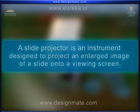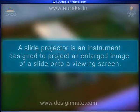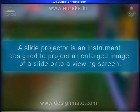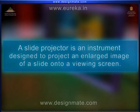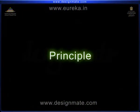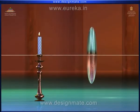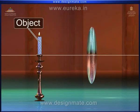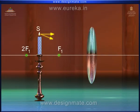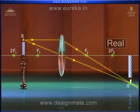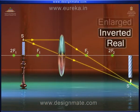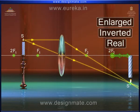A slide projector is an instrument designed to project an enlarged image of a slide onto a viewing screen. The principle behind the working of a slide projector is that when an object is positioned between 2F1 and F1 of a convex lens, a real, inverted, and enlarged image of the object is formed at a point beyond 2F2.